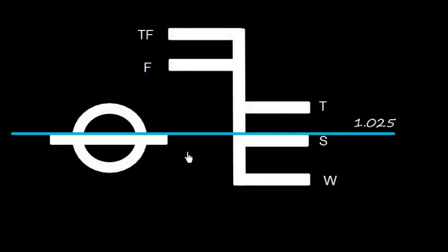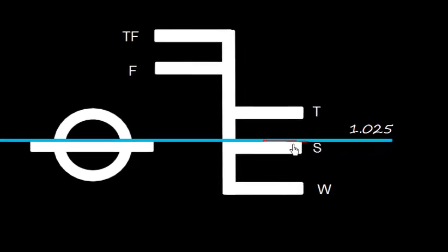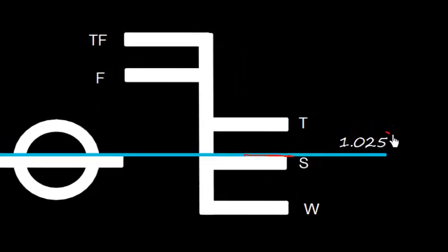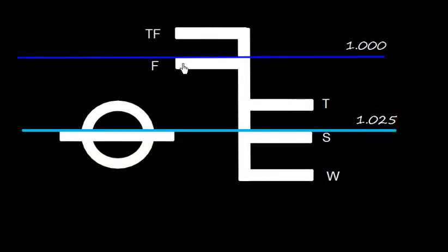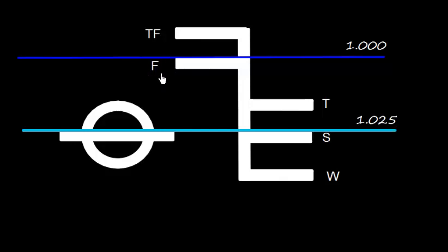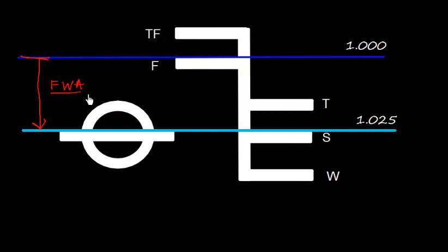A vessel can be loaded up to the summer load line — that is the upper edge of the summer load line — where the density is 1.025. We also know this is the F mark; in fresh water, we can load up to the F mark where density is 1. The difference from 1 to 1.025, from the F mark down to the S mark, this vertical distance is called fresh water allowance.